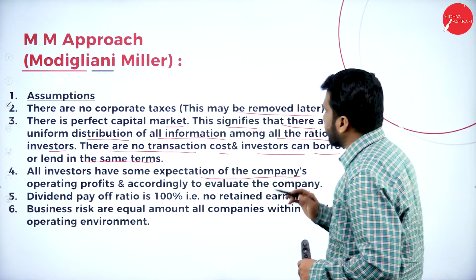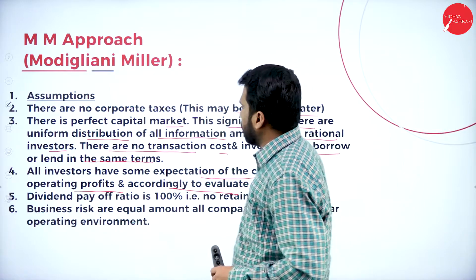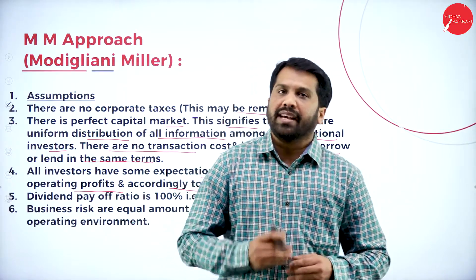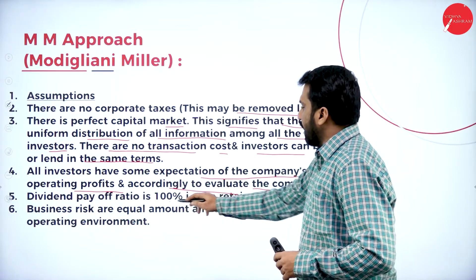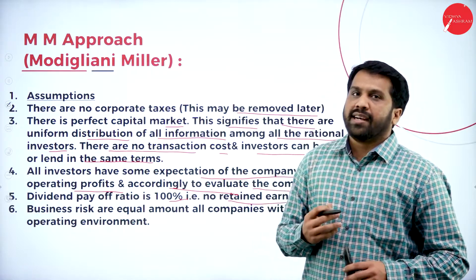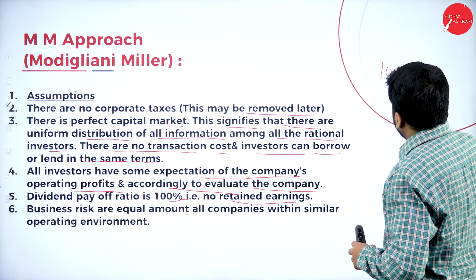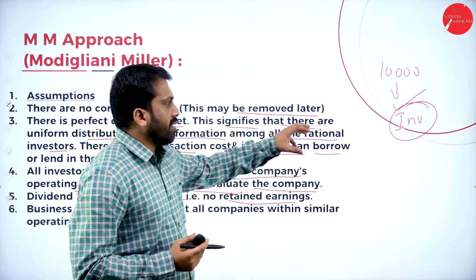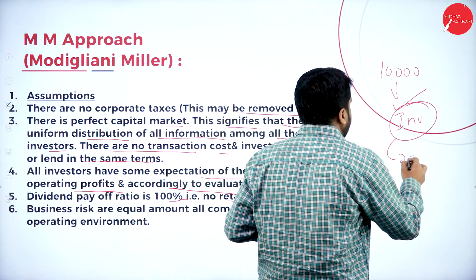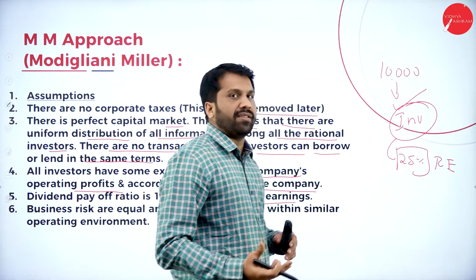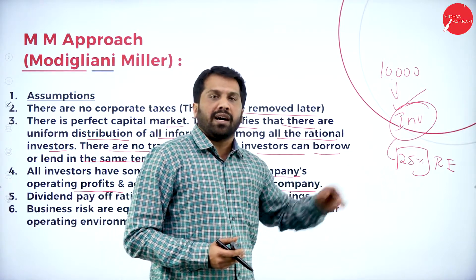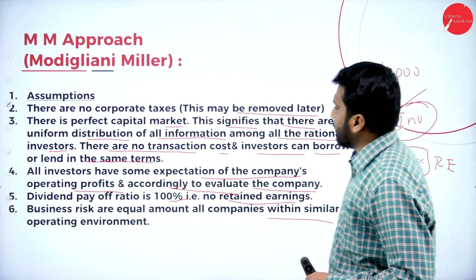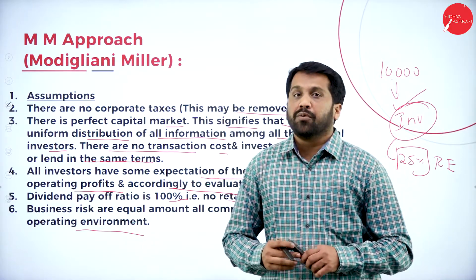All investors have the same expectation of the company's operating profit and use it to evaluate the company. Whatever operating profit is earned by the company goes entirely to investors, so the dividend payout ratio is always 100% — there is no retained earnings. Business risks are equal among all companies within a similar operating environment. These are the major assumptions we need to remember.